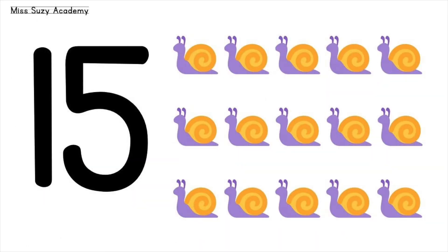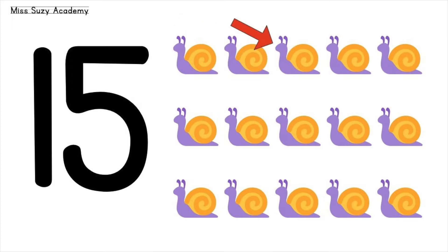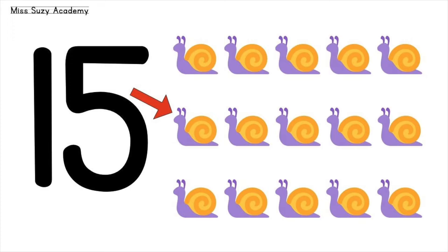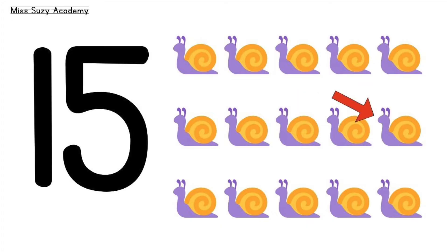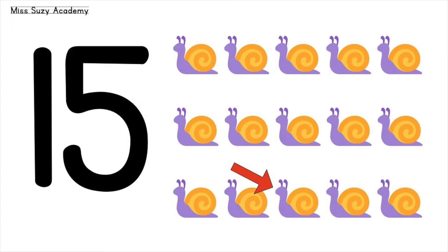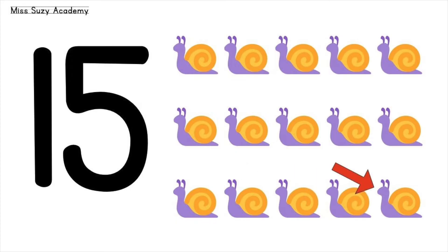15 snails: 1, 2, 3, 4, 5, 6, 7, 8, 9, 10, 11, 12, 13, 14, 15.